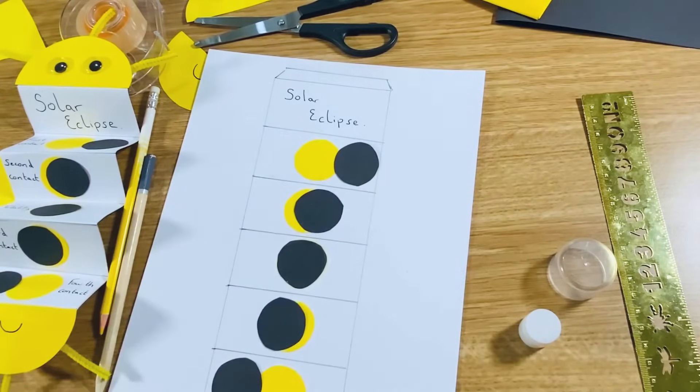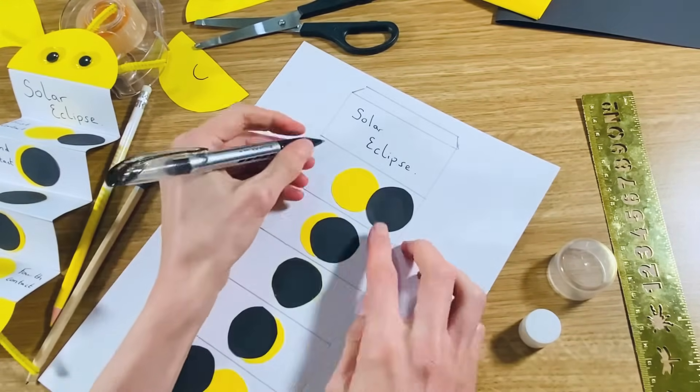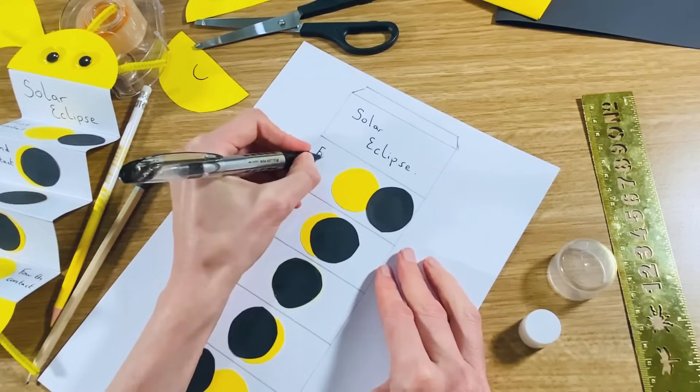So now those are all glued down, we can write what the stages are called. So this one here is called first contact.